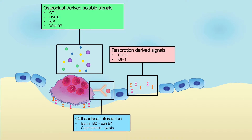The third pathway is when the osteoclasts start to resorb the bone, they expose some proteins on the surface of the bone that attract the osteoblasts to come and start the second phase, or bone formation phase.